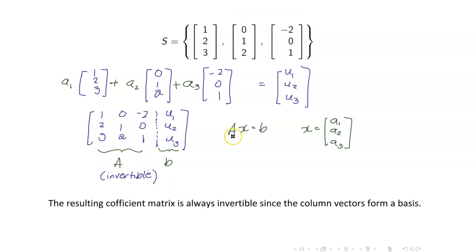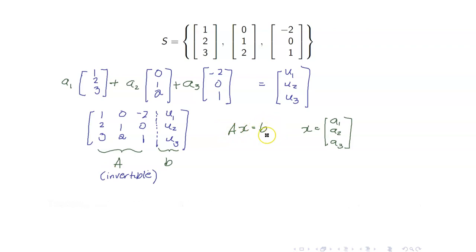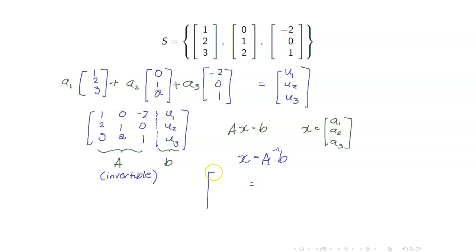Therefore, if A is invertible, this vector equation will always have a solution. The solution is X equals A inverse B. So our X, which is equal to A1, A2, A3, is going to be equal to A inverse, which in this case is given by this matrix.